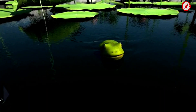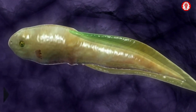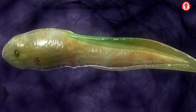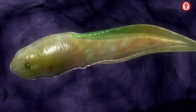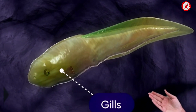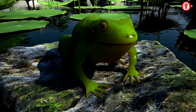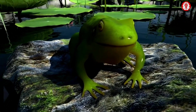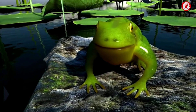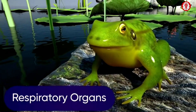The entire development of the frog takes place in water. In the tadpole stage, the respiratory organs are mainly gills, while the adult frog living on land breathes through the skin, buccopharyngeal cavity, and lungs, which are its respiratory organs.